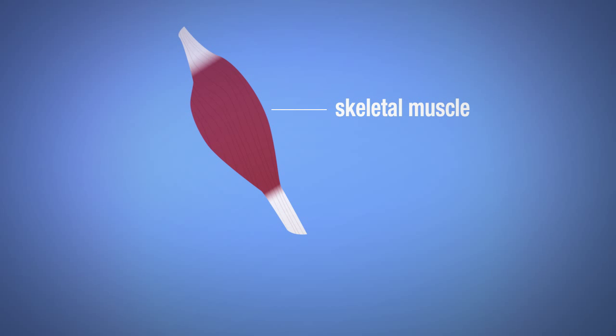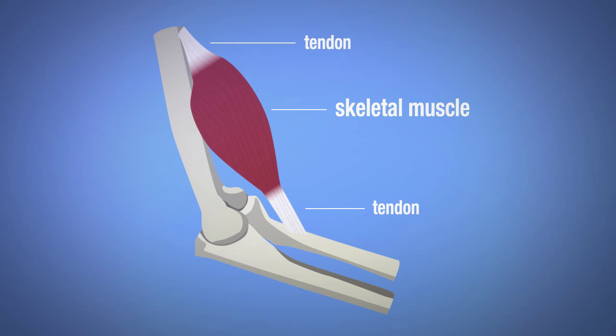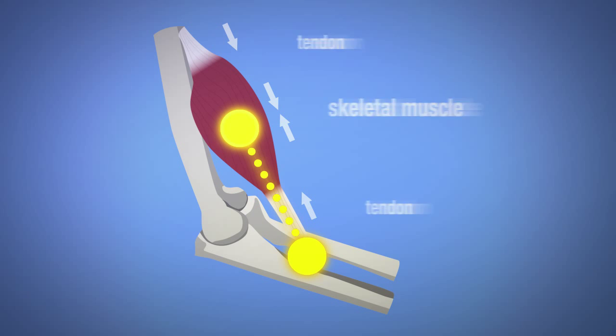Skeletal muscles, with few exceptions, are connected to at least two bones. Skeletal muscles are connected to bone by tendons. Hence, when muscles contract, force is put on our tendons, which is then transmitted from muscle to bone, which enables us to move.